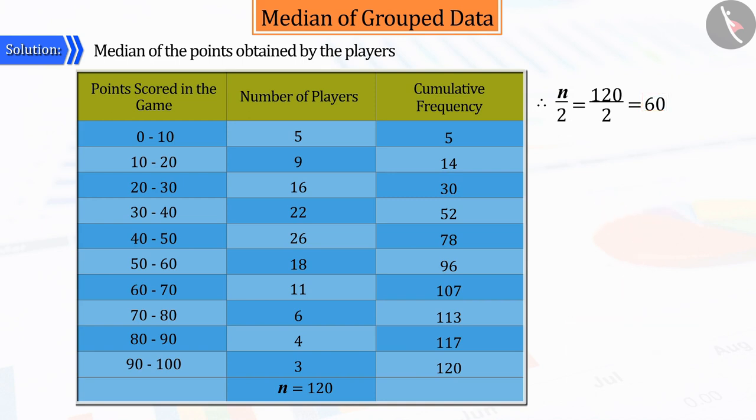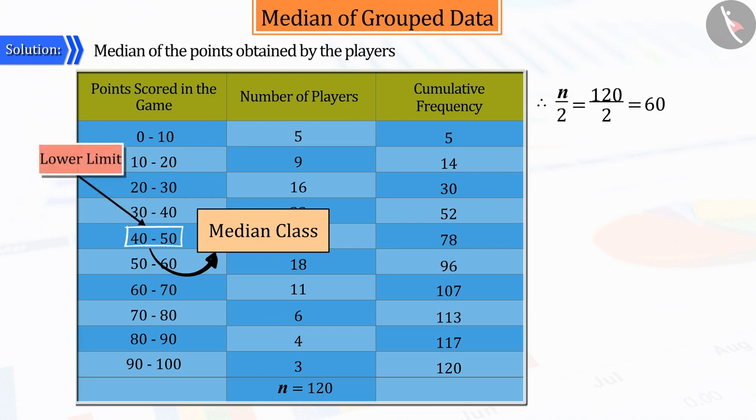Well done. The class interval of 40 to 50 is the only one whose cumulative frequency is more than 60 and also closest to it, which we call the median class, where 40 is its lower limit and 50 is its upper limit.